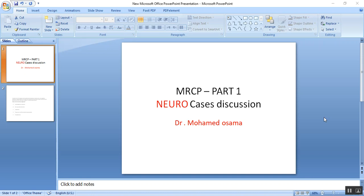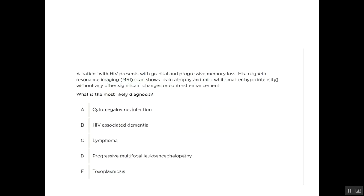Assalamualaikum. One new case of neuro scenario discussion for MRCB Part 1. A patient with HIV presents with gradual and progressive memory loss. His MRI scan shows brain atrophy with mild white matter hyperintensity without any other significant changes or contrast enhancement. What is your most likely diagnosis?